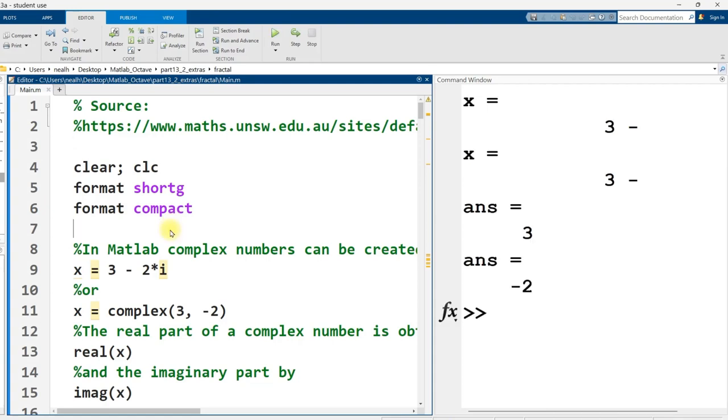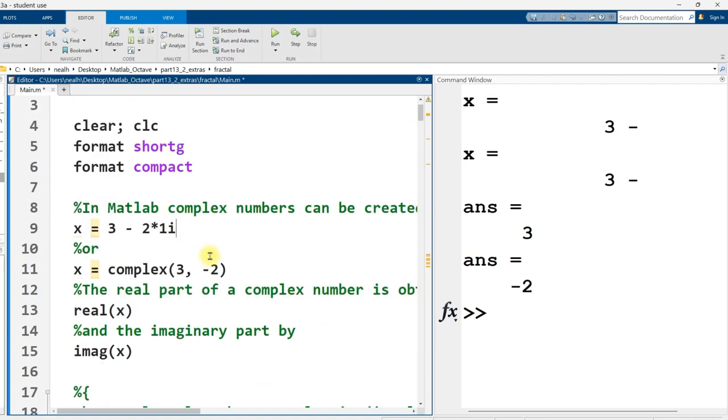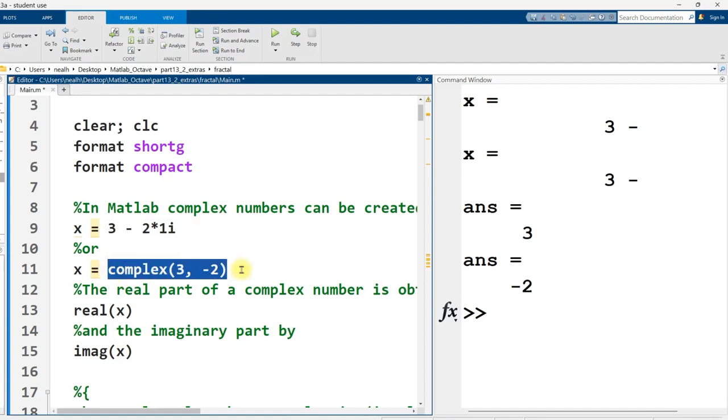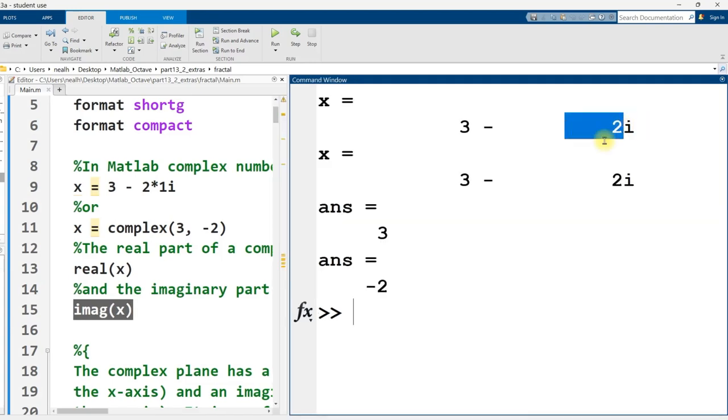But before we jump into fractals, I need to tell you about complex numbers. So let's run this first section here. A complex number is a number with two parts, a real portion and a real number multiplied by an imaginary number, multiplied by the square root of negative one. MATLAB asks us to use 1i instead of just i as the imaginary number.